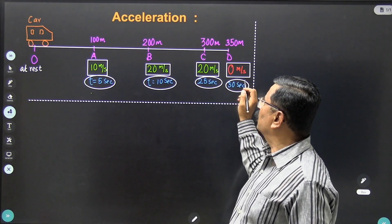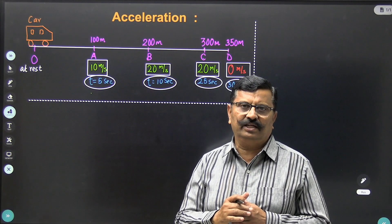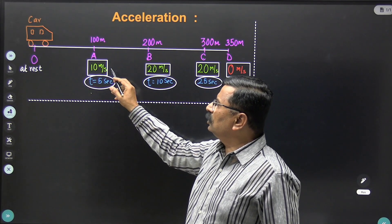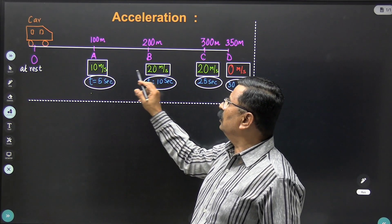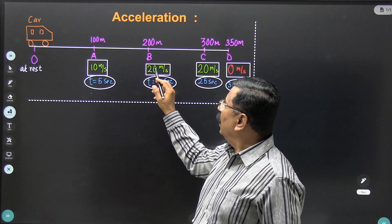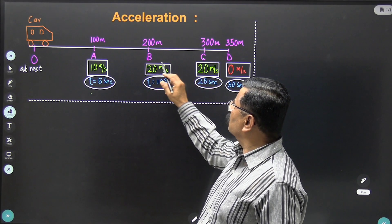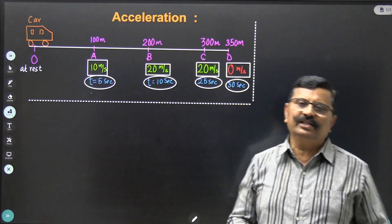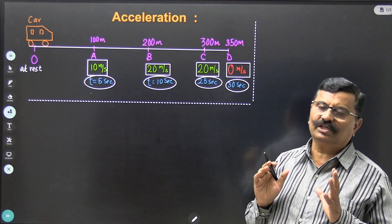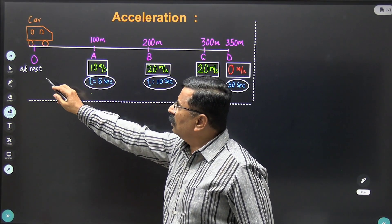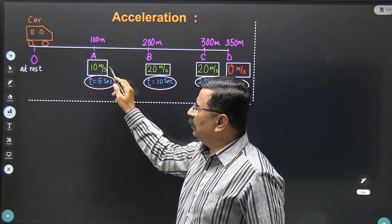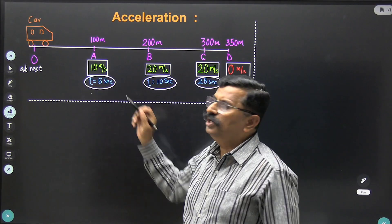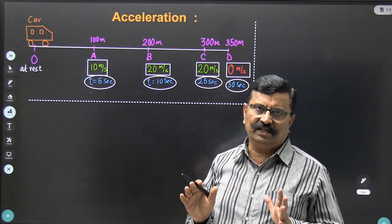So the final speed becomes 0 meters per second. To summarize: the speed of the car starts at 0, then increases to 10 meters per second, then increases again to 20 meters per second. Then the speed remains constant from point B to point C, and thereafter the speed of the car decreases. This is where the acceleration concept comes in. When the speed of the car is increasing from point O to point A, from T equal to 0 to T equal to 5 seconds, the car is accelerating.